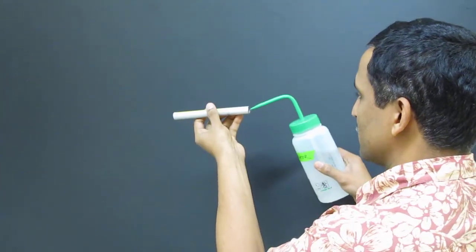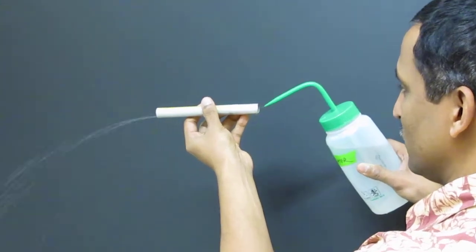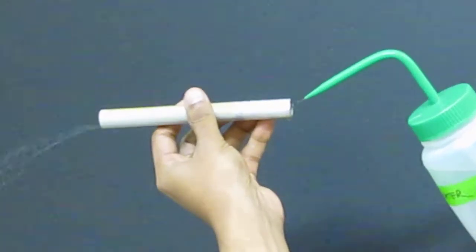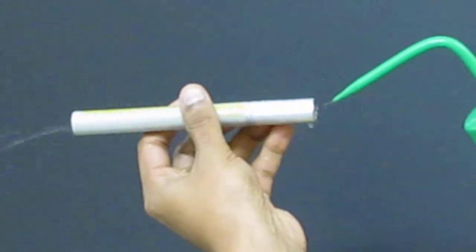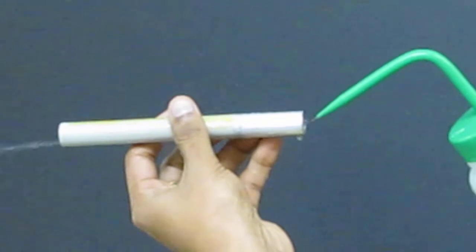Again, I'm repeating the same experiment. As you can see, it's much different from the other two surfaces we've seen before. It's basically throwing the water from the outlet.